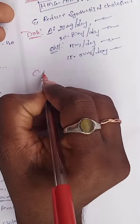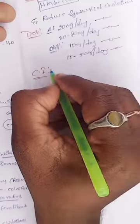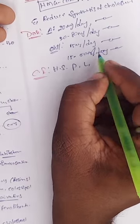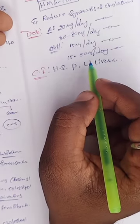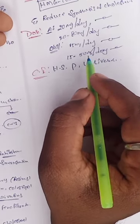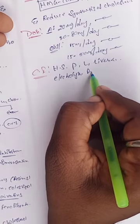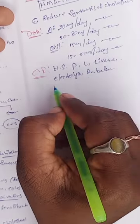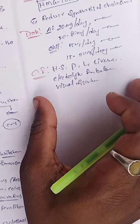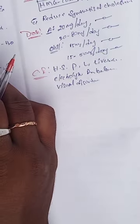What are the contraindications? Contraindications include hypersensitivity, pregnancy, lactation, and liver diseases. It also produces electrolyte imbalance. In children, it can produce visual disorders.